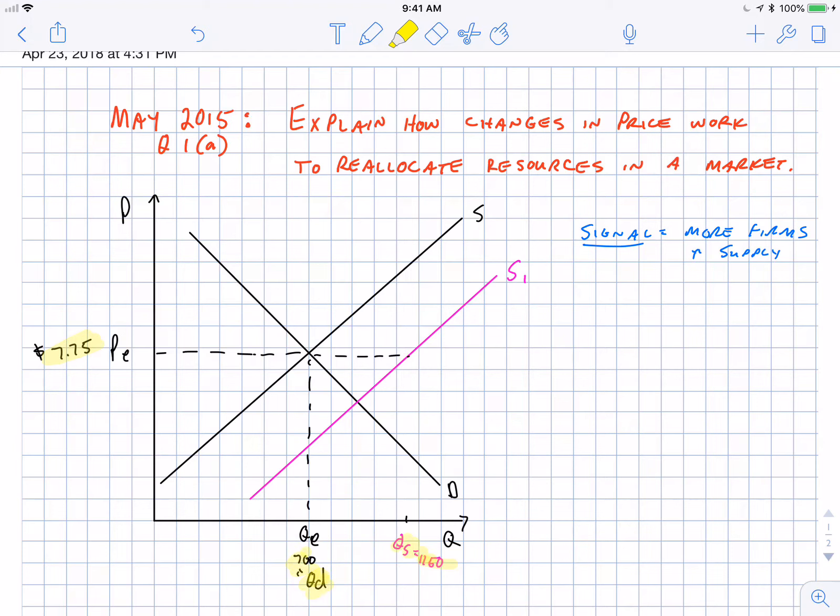If there's more supply than demanded, there's a surplus to that good. It makes sense that after the signal of goods in the marketplace, there's more firms that at the original price, there's a lot more firms producing that good than people want that good.